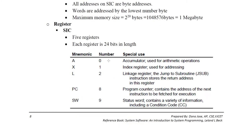In SIC, there are 5 registers: A, X, L, PC, and SW. A is the accumulator, used for arithmetic operations. X is the index register, used to store the array index. L is the linkage register, used to store the return address of a subroutine. PC is the program counter, containing the address of the next instruction to be executed. SW is the status word, which stores condition information such as the conditional code. All registers are 24 bits in size.